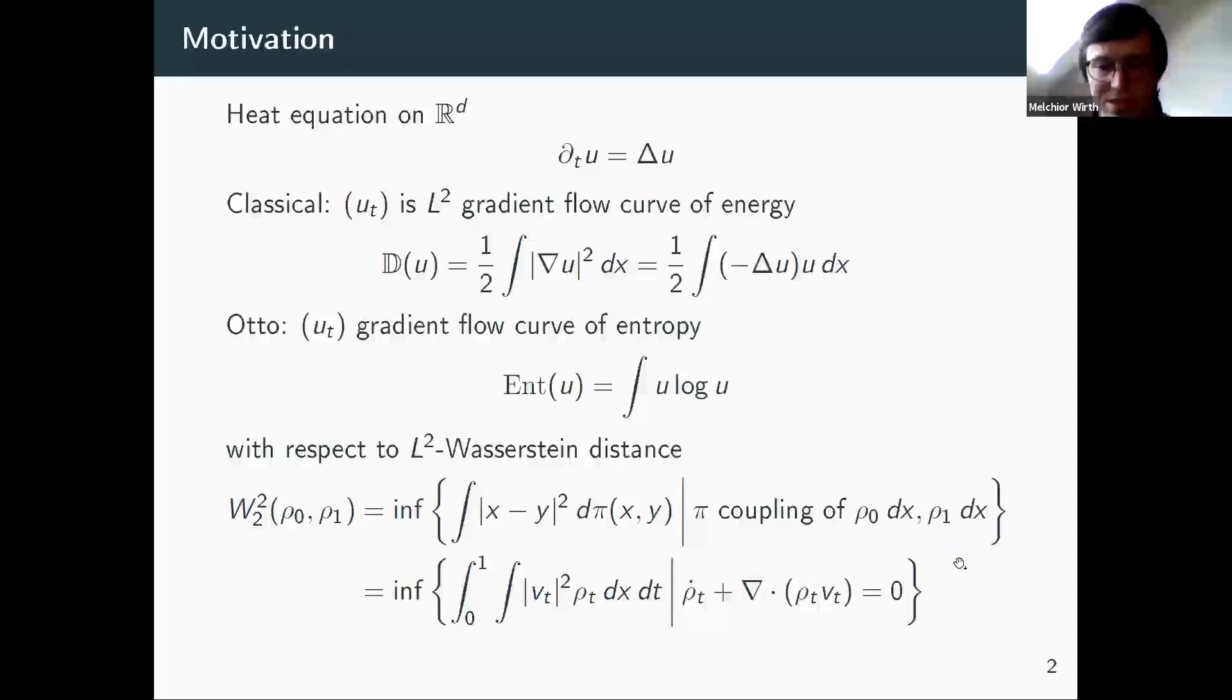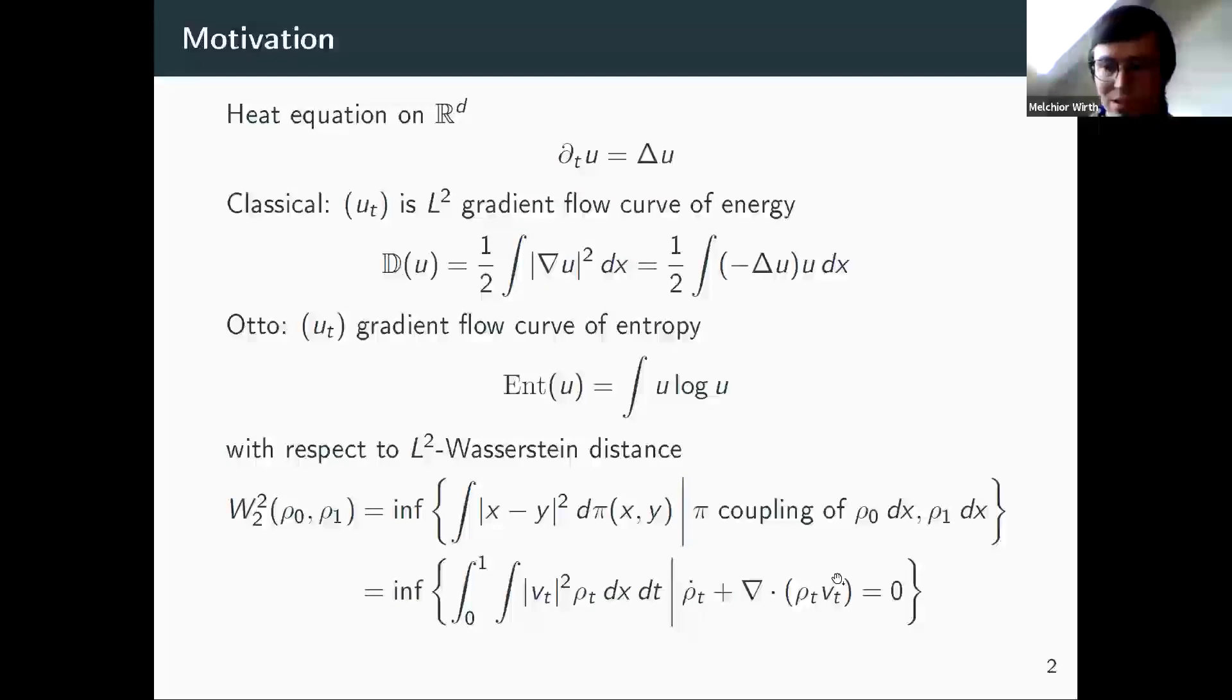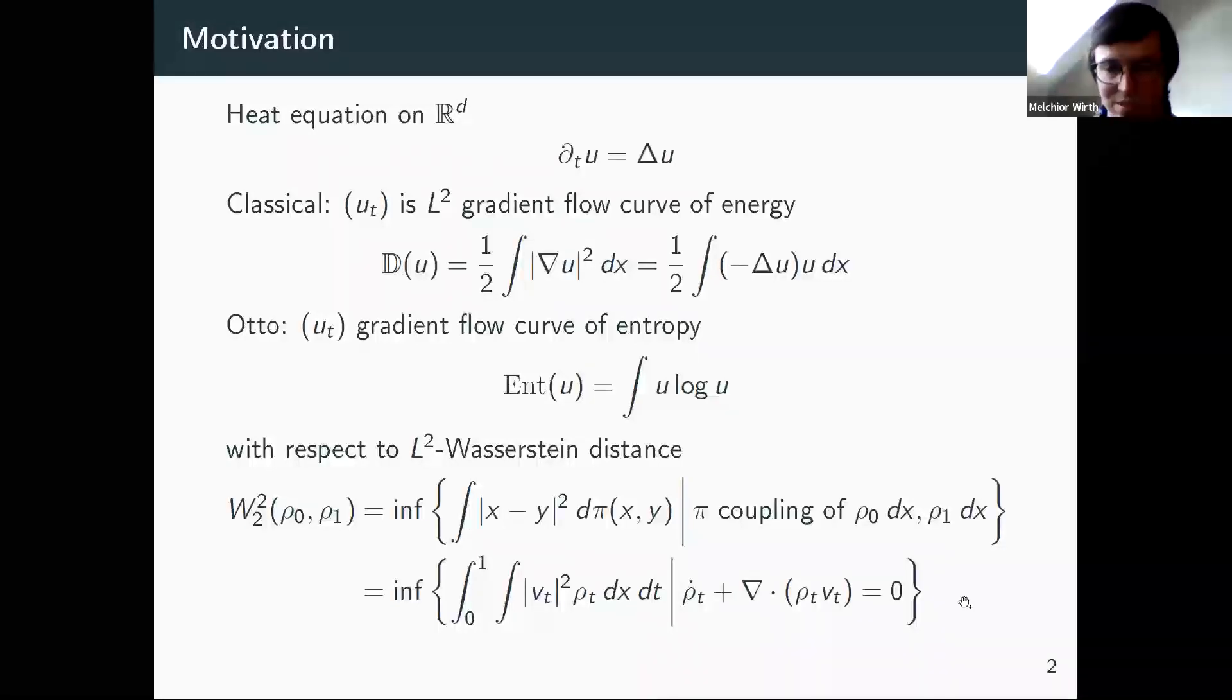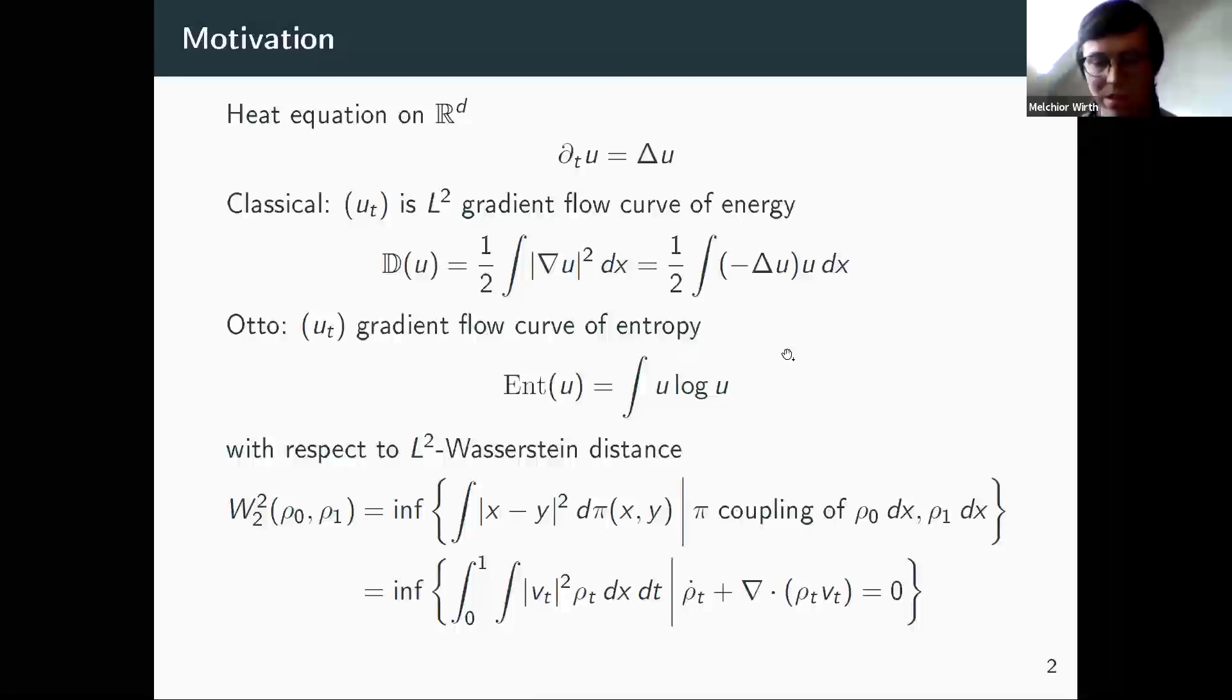I said the solution of the heat equation is a gradient flow curve with respect to this L^2 Wasserstein distance. This doesn't make too much sense without giving details. One way to understand this statement is the second equality looks like the distance function coming from a metric tensor. And indeed, you can write down a formal metric tensor that gives this Wasserstein distance as a distance function. Then the gradient of the entropy with respect to this metric tensor is once again the Laplacian of u. And now the aim of my talk is to give a kind of non-commutative version of this result of Otto's.